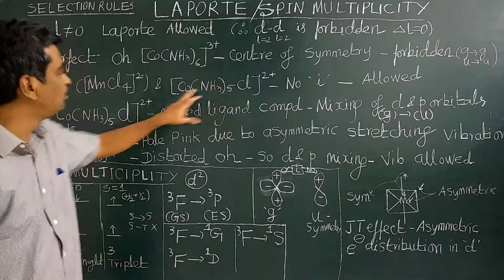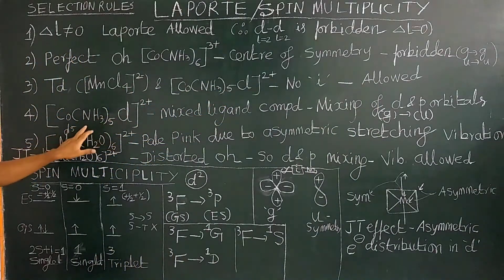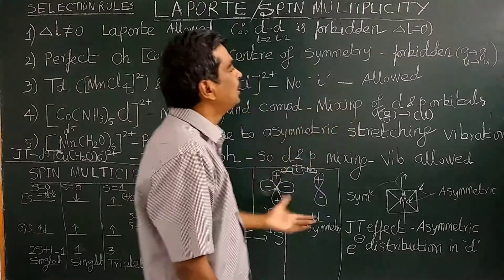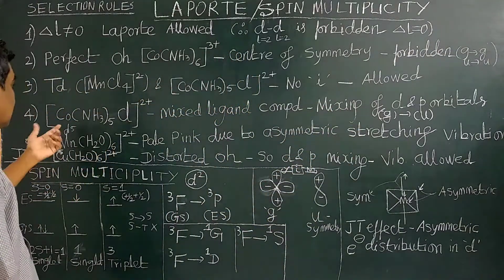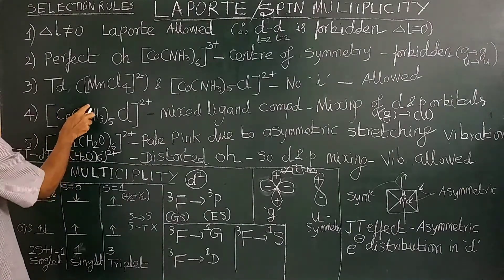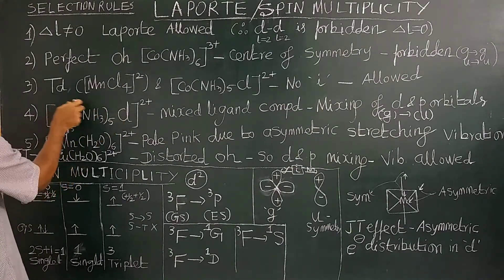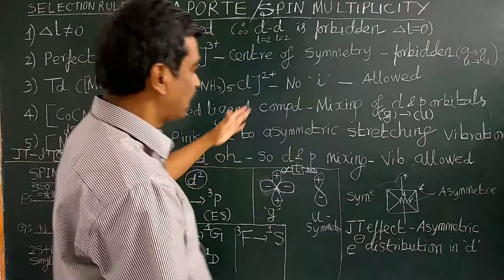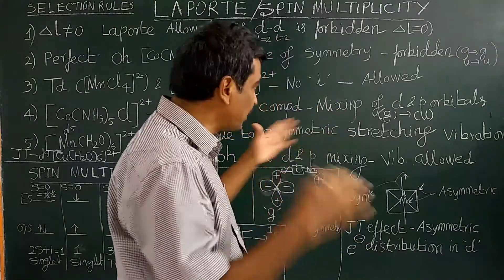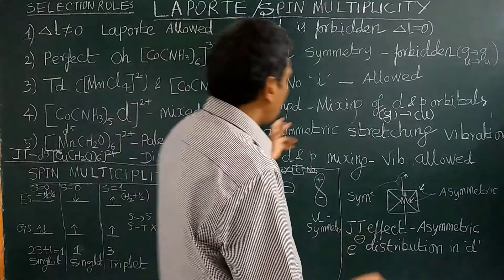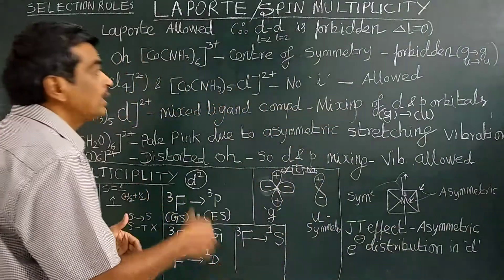Now we will see the reason for mixed ligand complexes. For example, there are two different types of ligands in the coordination sphere. In this case, there is mixing of d orbitals with p orbitals in the ligand — mixing of d and p orbitals. This occurs because of lower symmetry. If the complex has perfect symmetry, there will be no mixing of d and p orbitals.